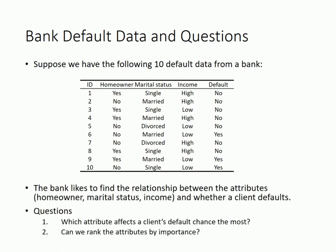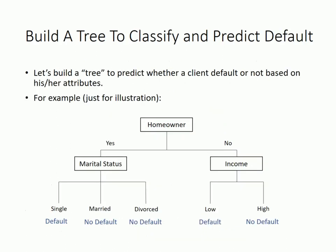The bank likes to find the relationship between attributes such as home ownership, marital status, and income, and whether a client defaults. The bank also asks: which attribute affects a client's default chance the most? Can we rank the attributes by importance? How do we answer those questions?